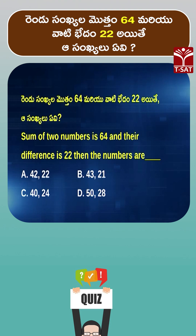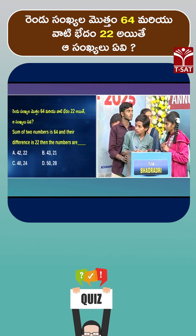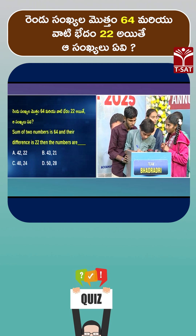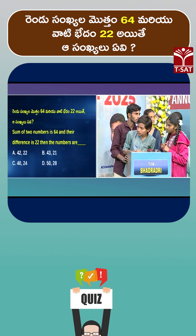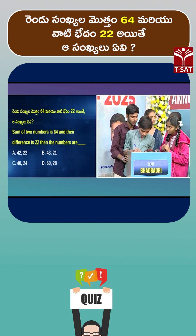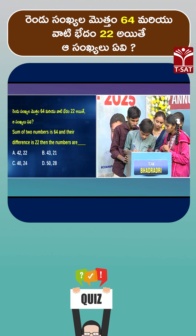The sum of two numbers is 64 and their difference is 22. Then the numbers are: option A 42, 22; option B 43, 21; option C 40, 24; option D 50, 28.